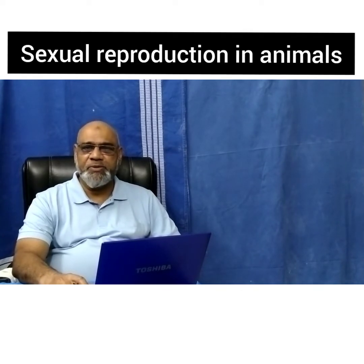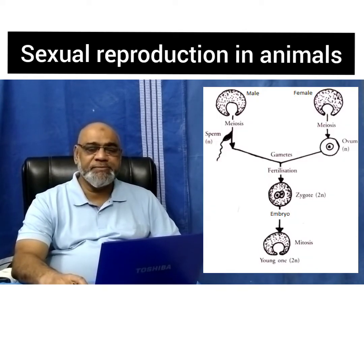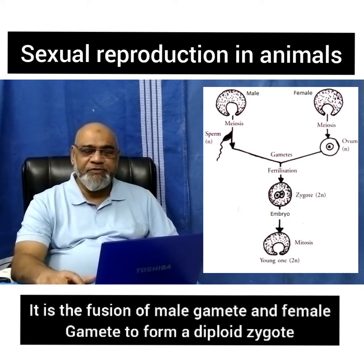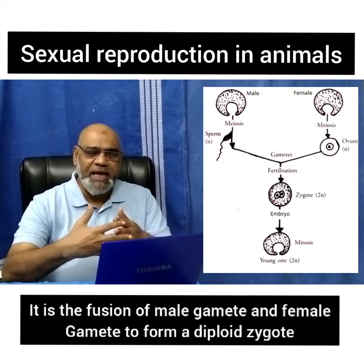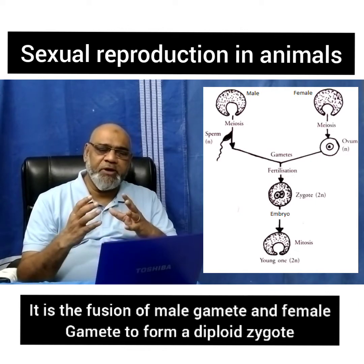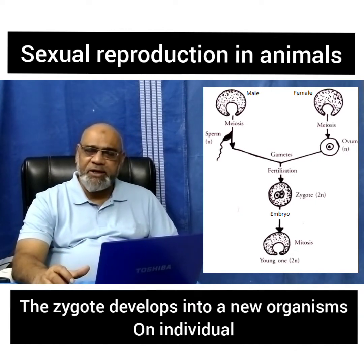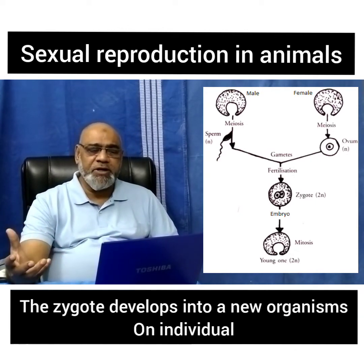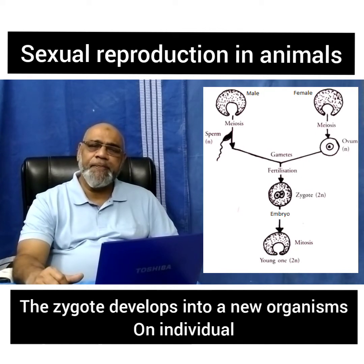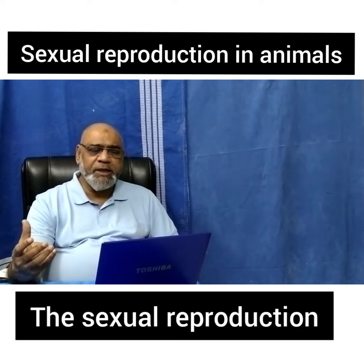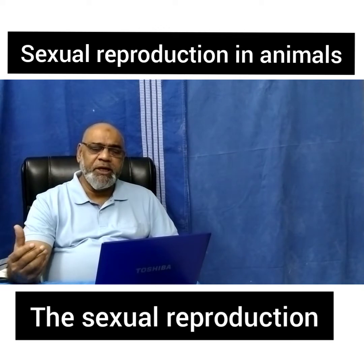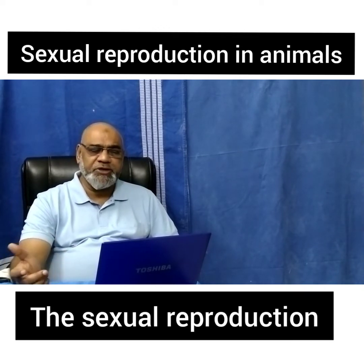Hello friends, today we shall discuss about sexual reproduction in animals. What is sexual reproduction? It is the fusion of the male and the female gametes to form a diploid zygote. The zygote develops into a new organism or individual. Sexual reproduction produces individuals with genetic variation.